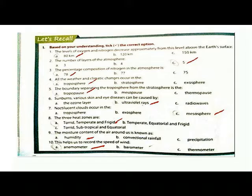Question 8: The moisture content of the air around us is known as humidity. This instrument helps us to record the speed of wind - anemometer.